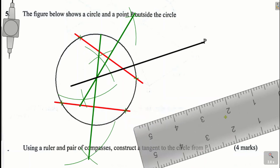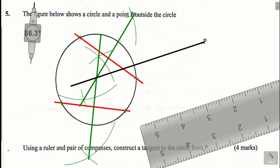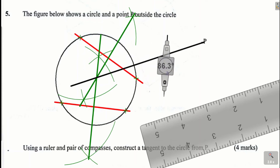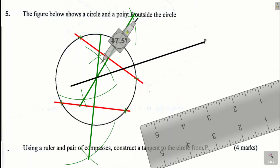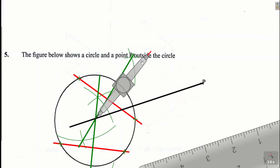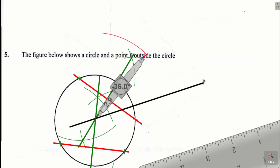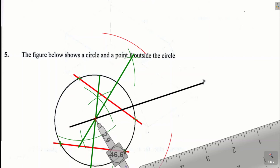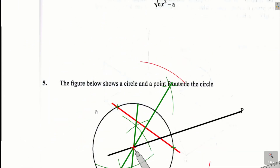The next thing we're going to do is construct the perpendicular bisector of that line OP. To bisect that line, stand at the center of the circle O, open the pair of compasses more than half of that line, then mark an arc above and another arc below with the same radius.